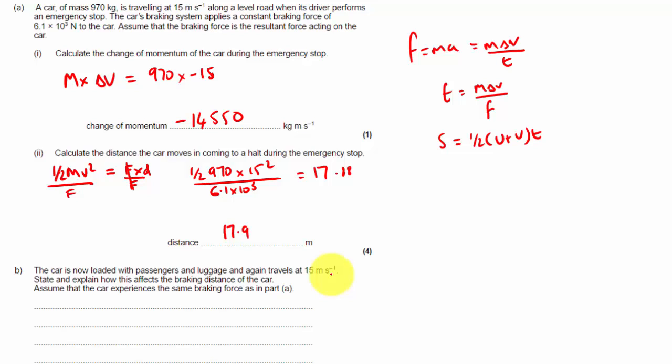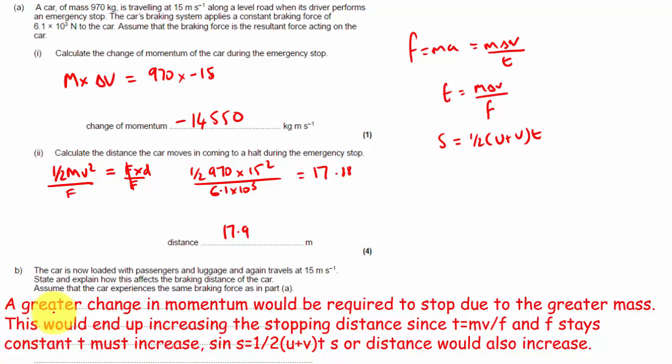Right, so that pretty much explains it in terms of energy, so that's the way I answered this bit. But if I wanted to explain it in terms of momentum, I could say a greater change of momentum would be required to stop the car due to its greater mass. This would end up increasing the stopping distance, since t equals mv over f, which is this. And f stays constant, so t must increase, right?